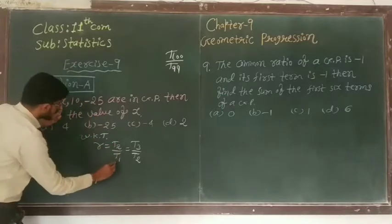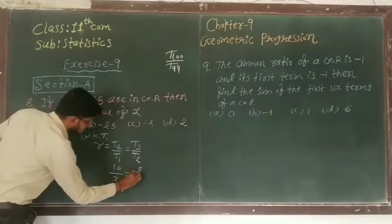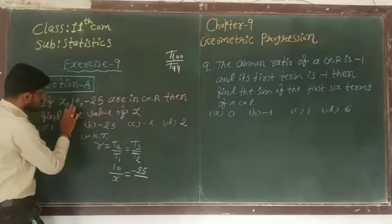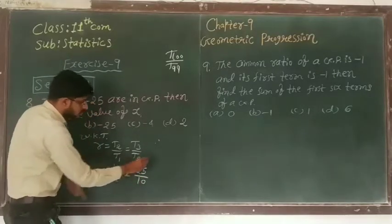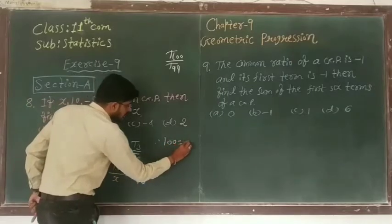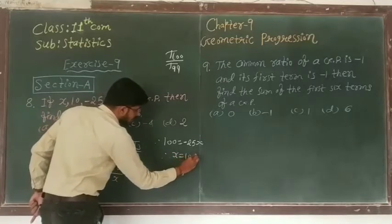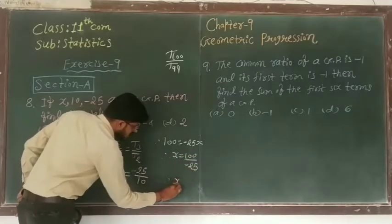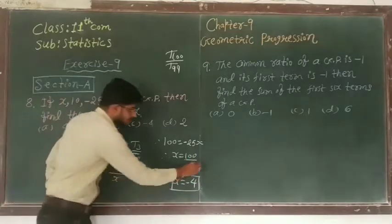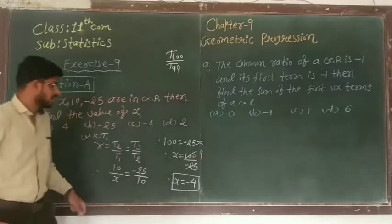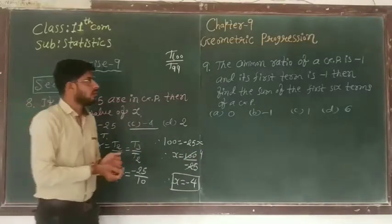T2 is 10. So 10 by t1, t1 is x. This is equal to t3 is minus 25 upon t2 is 10. So 100 equal to minus 25x. Therefore x equal to 100 upon minus 25. So the value of x is minus 4. Because 25 goes in 100 four times. So our answer is minus 4, option C.